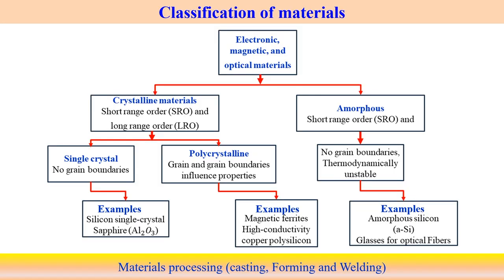Crystalline materials can be of two types: single crystal and polycrystalline. Single crystal typically does not have grain boundaries. Polycrystalline materials have a clear distribution of grain boundaries, and the presence of grain boundaries influences the properties of the polycrystalline material. Examples of single crystal materials are silicon single crystal and sapphire (Al₂O₃). Polycrystalline material examples include magnetic ferrites, high-conductivity copper, and polysilicon. Single crystal is mainly used in the electronics industry, while polycrystalline is more associated with magnetic materials.